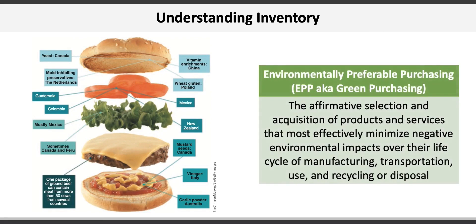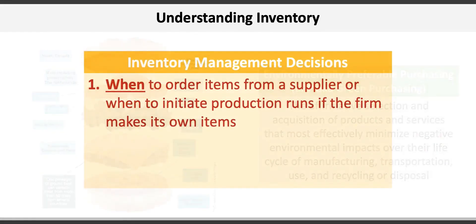Many firms and customers are moving to support environmentally preferable purchasing, or EPP, also known as green purchasing. This is the affirmative selection and acquisition of products and services that most effectively minimize negative environmental impacts over their life cycle of manufacturing, transportation, use, and recycling or disposal.